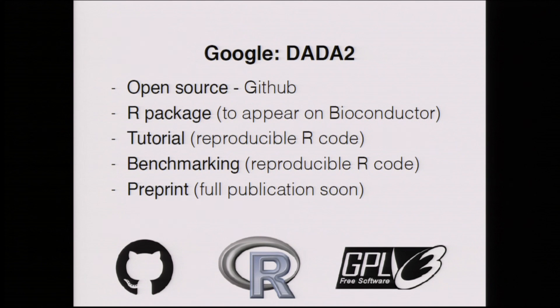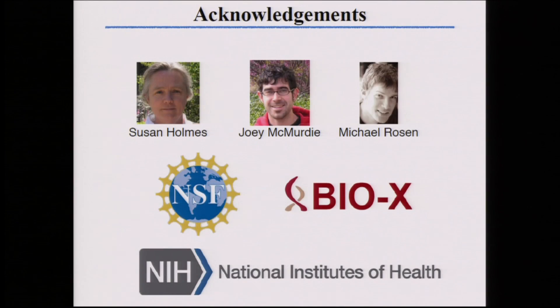The method is available now as an R package on GitHub, and will be on Bioconductor. It's open source; you can download scripts that run through this, do some benchmarking, and do a tutorial you can run on your own computer. The preprint is available and the full publication will be available soon. I want to thank Susan, Joey McMurdy, and Mike Rosen, who was an important part in developing some of the ideas in this algorithm. Thank you.